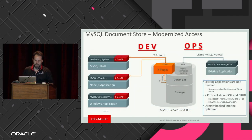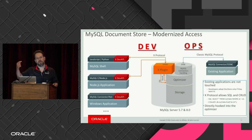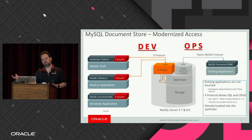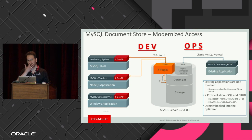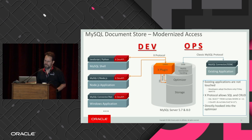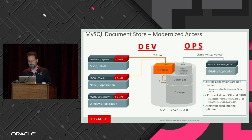All the drivers that we maintain now have this second way of talking to the database with the X Protocol. There's an X API that talks to a plugin on the server side, available since 5.7. By default, MySQL listens on the traditional protocol on port 3306, and the X Protocol listens by default on port 33060. You just need a new port opened on your server and suddenly you have all these new clients that can connect to the database in a new way.